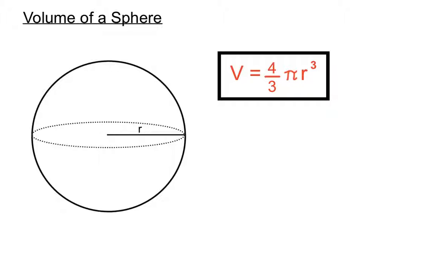There's only one spot where we put a number, and that's where the radius is. The other value is pi on our calculator, and we multiply it by 4 over 3 using our fraction button, and that finds our volume quite nicely. Any time you've got a formula question, you write the formula on one line, and the next line down you substitute in the actual measurements or numbers from the question itself.